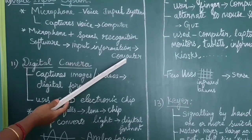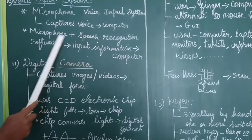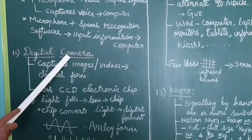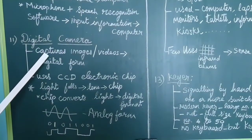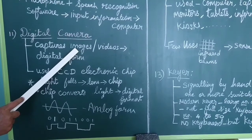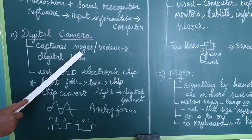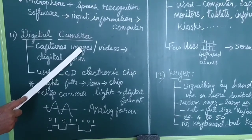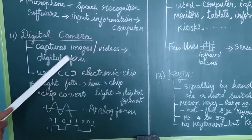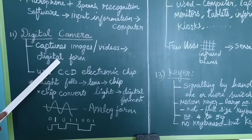The computer is able to input voice information. Next is the digital camera. A digital camera captures images and videos — photos, drawings, and pictures. The images are captured and stored in digital form, which means they are stored as 0s and 1s in the computer.